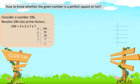A perfect square number is always expressible as the product of pairs of equal factors. In this case, we have two 2s and two 7s — both factors are present in pairs. So this given number, 196, is a perfect square.